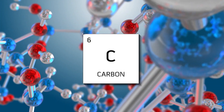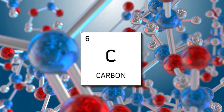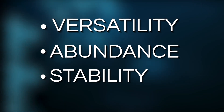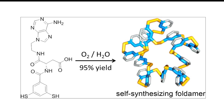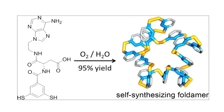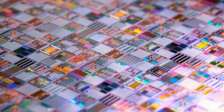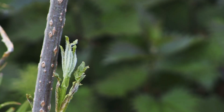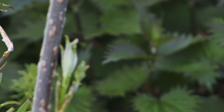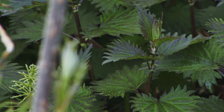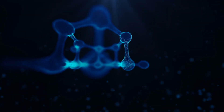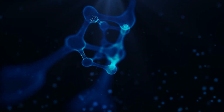Considering these factors, carbon emerges as the ideal element for life's chemistry. Its versatility, abundance, and stability make it uniquely suited for forming the complex molecules and intricate structures essential for life's processes. While silicon and other elements have their own unique properties and applications, they lack the combination of characteristics necessary to support the diverse chemistry and complexity observed in living organisms. Let's explore the factors that make carbon the perfect element for life, while considering the possibility of alternative forms of life.